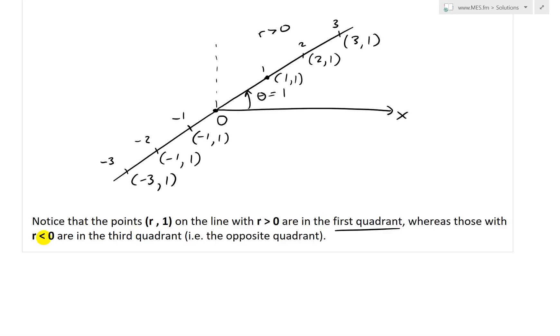So in the r is less than, or in other words, in the r is negative. Here, r is less than 0. What we have is this line is through the third quadrant, i.e. the opposite quadrant.